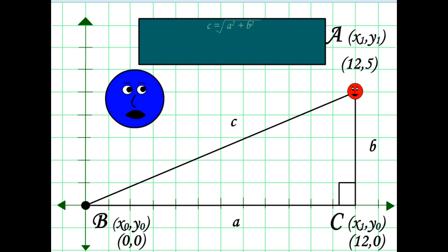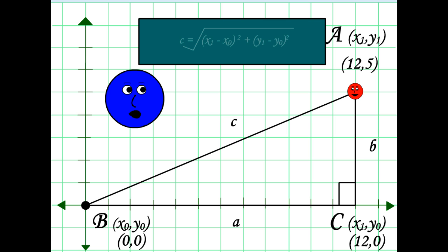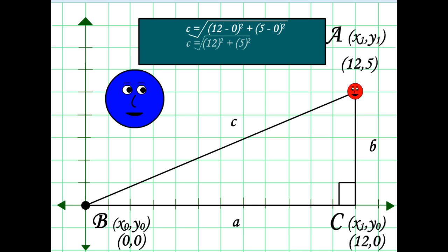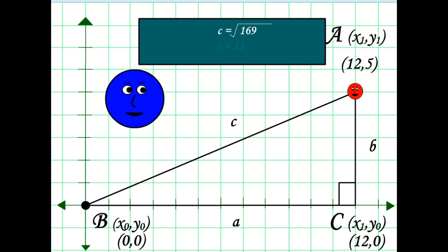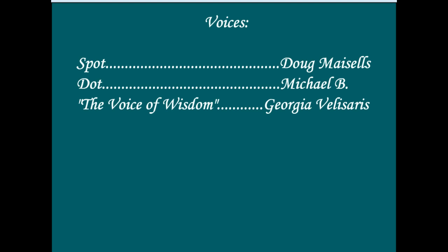So, recalling C equals the square root of A squared plus B squared, A equals x1 minus x0, B equals y1 minus y0, thus C equals the square root of quantity x1 minus x0 squared plus quantity y1 minus y0 squared. So if I take C equals the square root of 12 minus 0 squared plus 5 minus 0 squared, I get C equals the square root of 12 squared plus 5 squared, or C equals the square root of 144 plus 25, or C equals the square root of 169, or C equals 13! Yeah, I did it! Great work, Dot. Thank you!